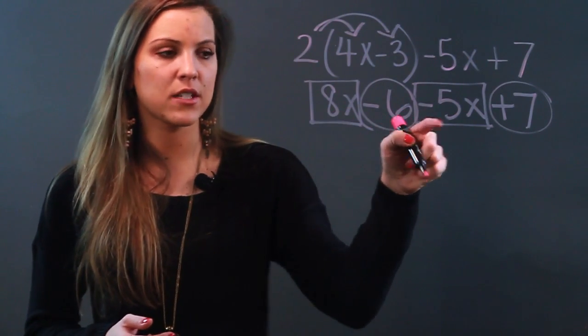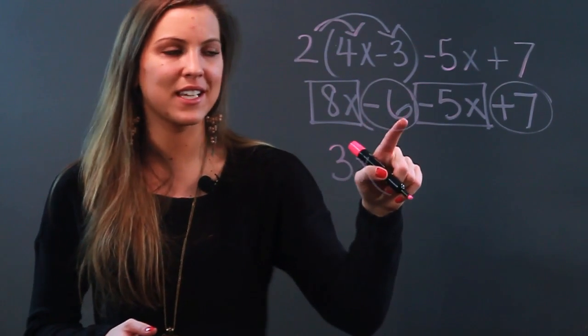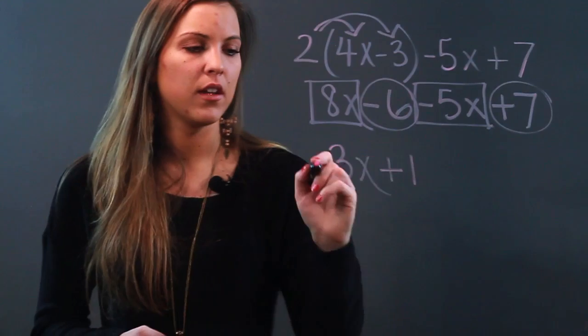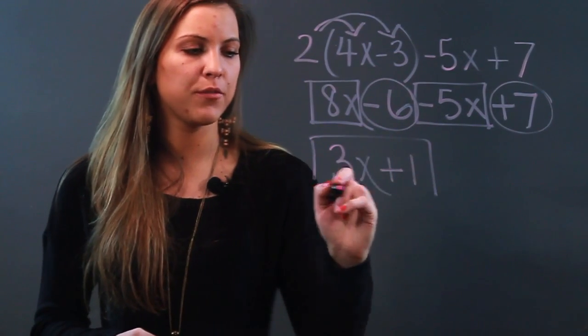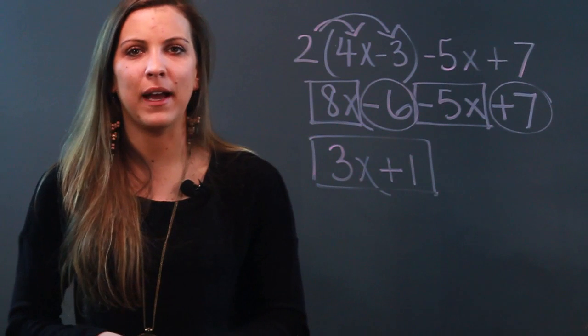I have 8 minus 5 which is 3x, and then I have negative 6 plus 7 which is positive 1. So that long expression simplified is 3x plus 1. That's how you remove the parentheses and combine like terms.